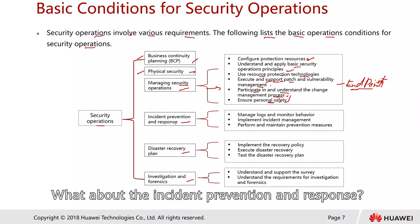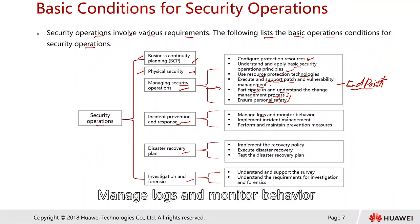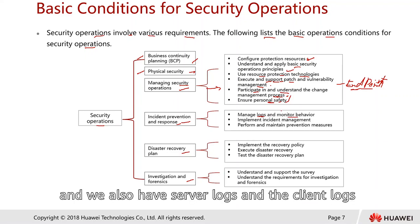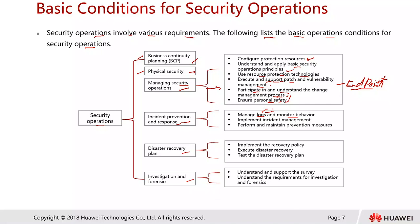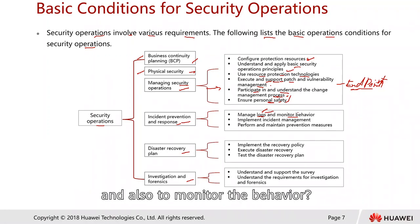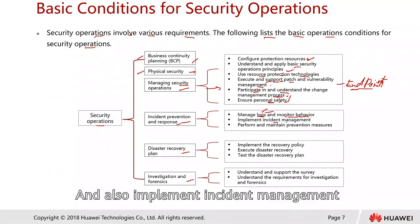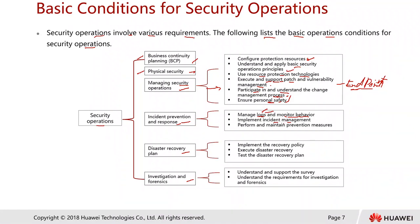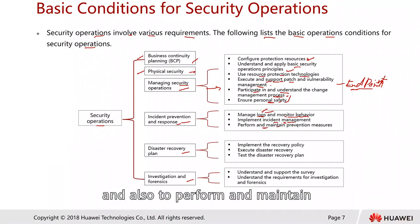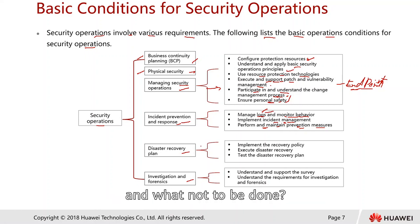For incident prevention and response, you need to manage logs and monitor behavior. This includes server logs and client logs — in Windows, we have the event viewer. Administrators must collect all logs and monitor behavior: who accesses the server, who accesses the system, and who tries to penetrate the system. You also need to implement incident management — a step-by-step procedure to handle issues — and perform and maintain prevention measures, as well as educate users on what should and should not be done.